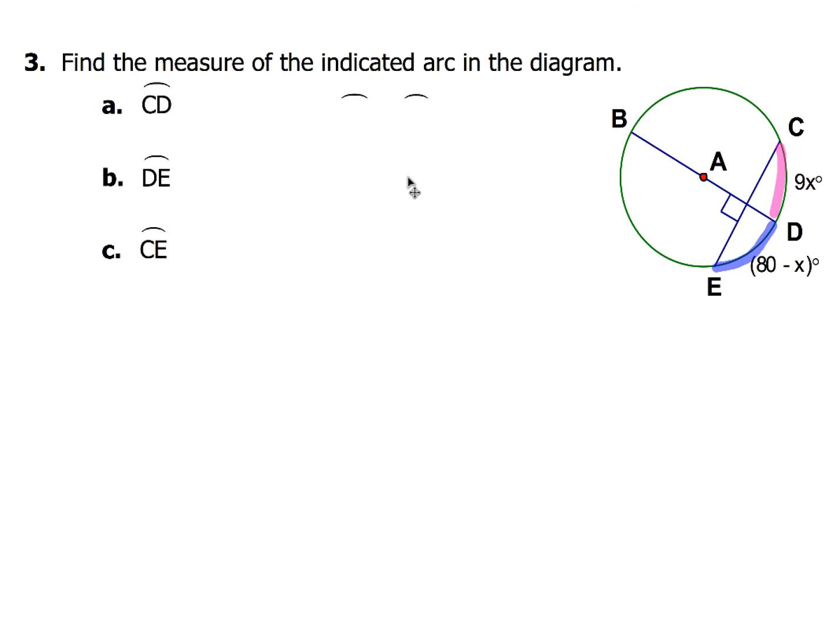First thing I want to do, set CD and DE equal to each other. So the DE arc and the CD arc, both of those pieces are going to be the same. After I've got that set, then I just set up my equations. So I've got that 9X and that's going to be equal to 80 minus X. From here, you can do the arithmetic and solve for X.